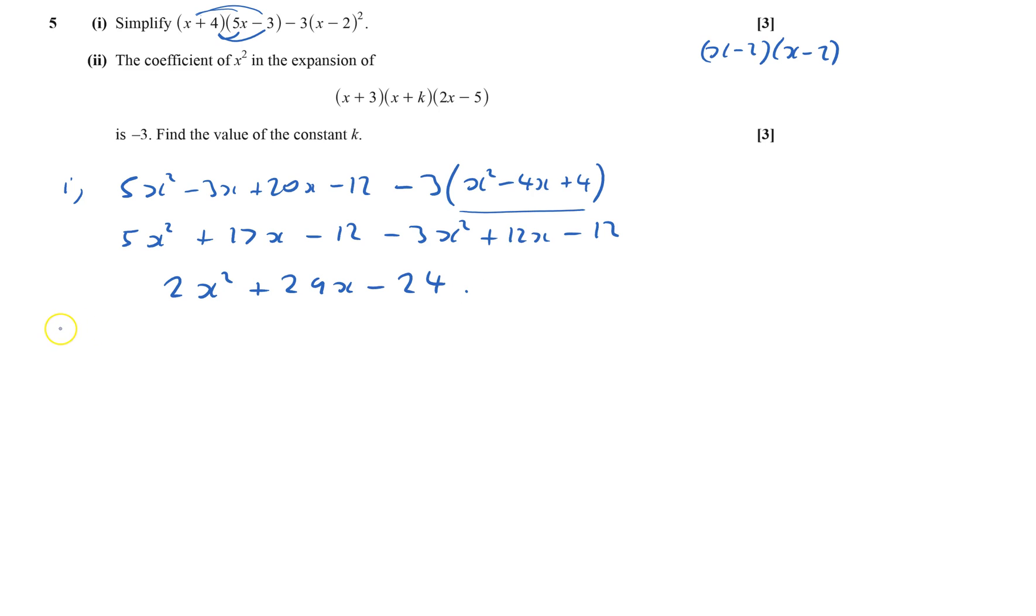And part 2, the x squared coefficient in this expansion is minus 3. So how do I get that? I could get the x times the x times the minus 5, so I get minus 5x squared.